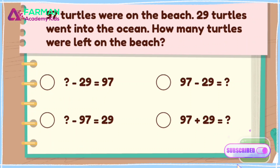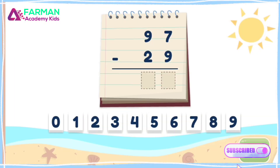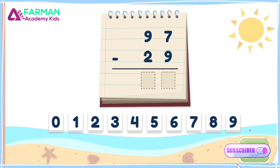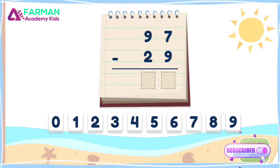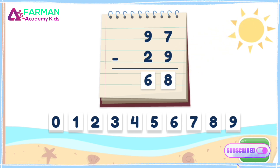Which equation matches the word problem? You got it! 97 minus 29 reflects the word problem. How many turtles were left on the beach? Drag the numbers to the dotted rectangles to solve the equation. Good work! 97 minus 29 is 68. There are 68 left.